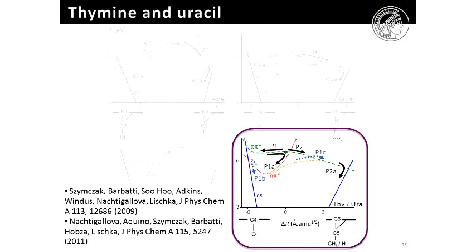In the case of a pyrimidine, like thymine or uracil, it's very similar. The schematic map is like this. And in the simulation, half of the trajectories that I simulate goes in a way like this, while the other half goes in a way like this.